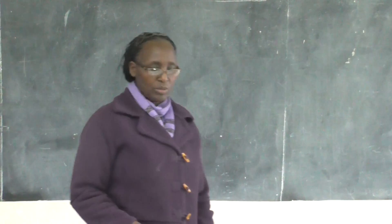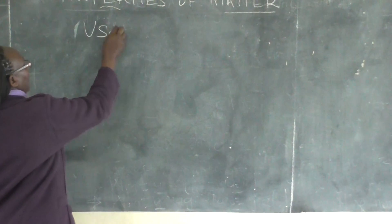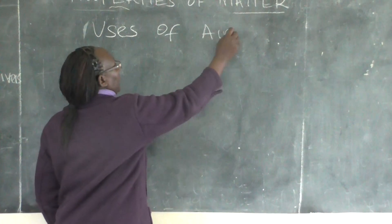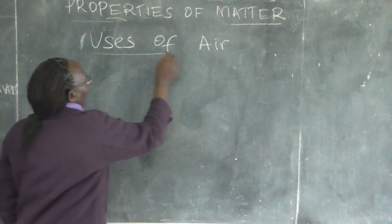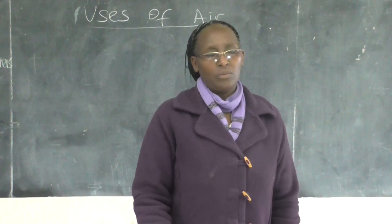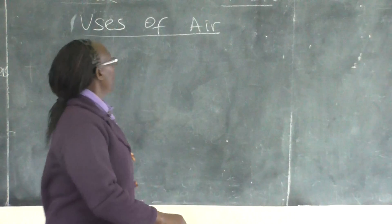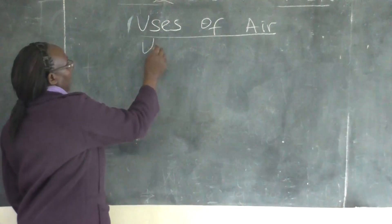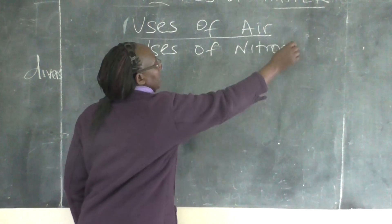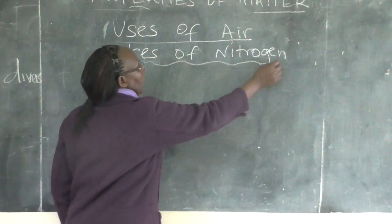Today we are going to talk about the uses of air. Remember, we have the components of air and there are four. So we are going to see part of this air, which is nitrogen. The uses of nitrogen.